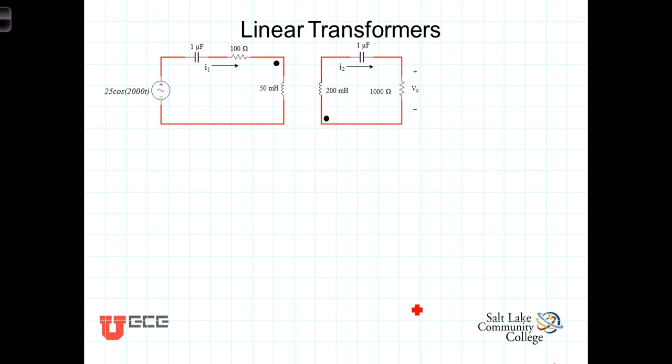A transformer is somewhat unique from other circuits that we've looked at in that the linkage between the primary and the secondary is found only through the mutual inductance. In this case m is equal to 100 mH. In other words there's no electrical linkage between the two, there's no current flow between these two, the only energy linkage is through the magnetic field between those two inductors.